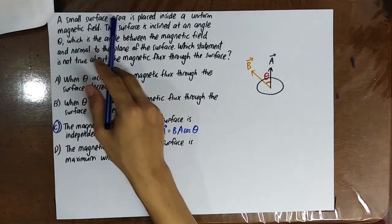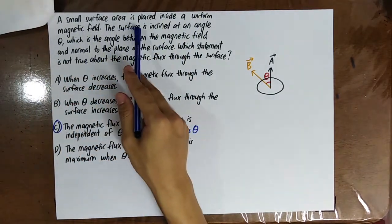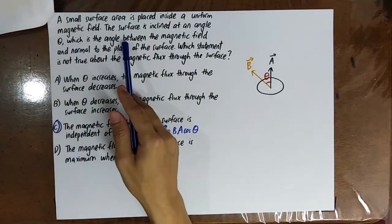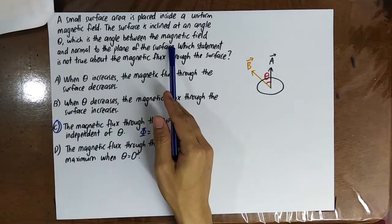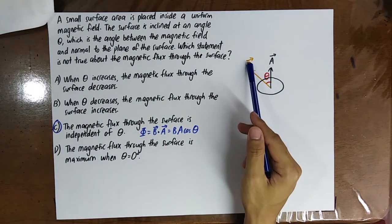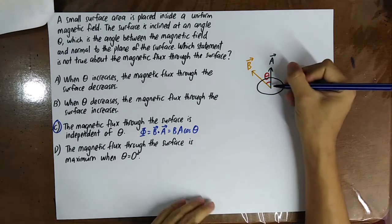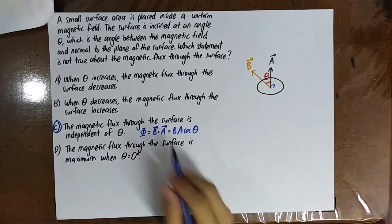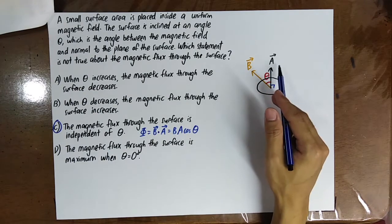A small surface area is placed inside a uniform magnetic field. The surface is inclined at an angle theta, which is the angle between the magnetic field and the normal to the plane of the surface — that is, the angle between B and the area vector.